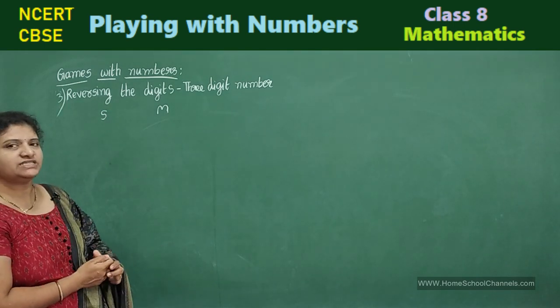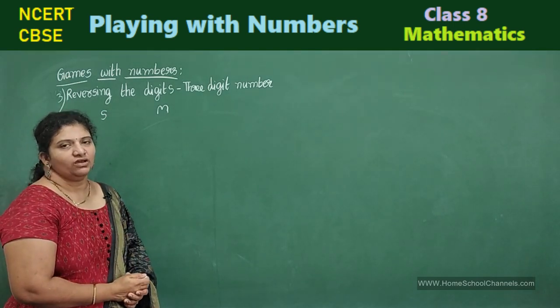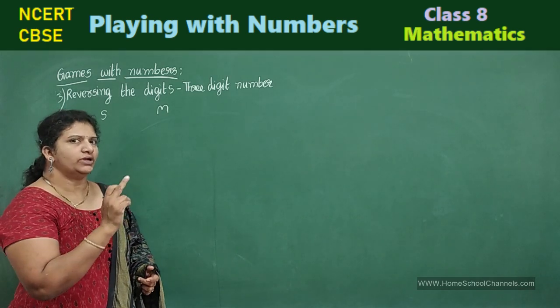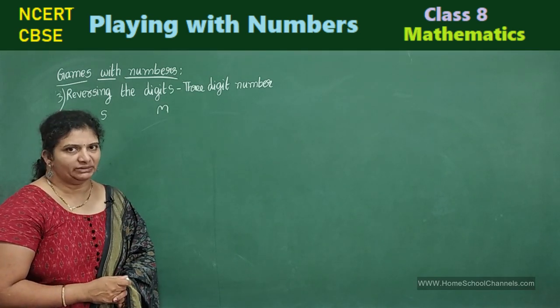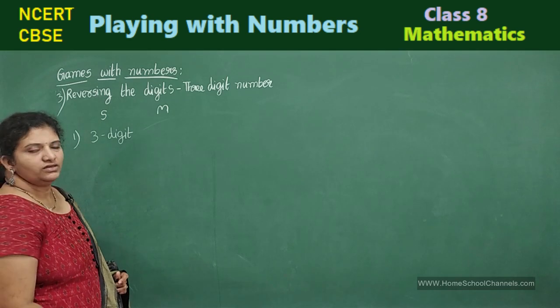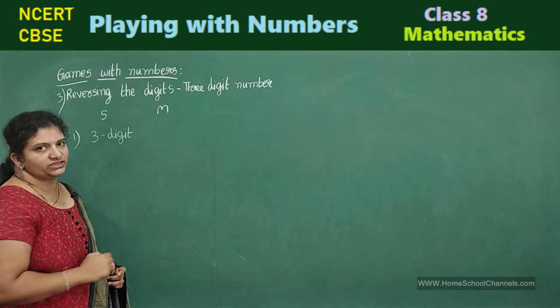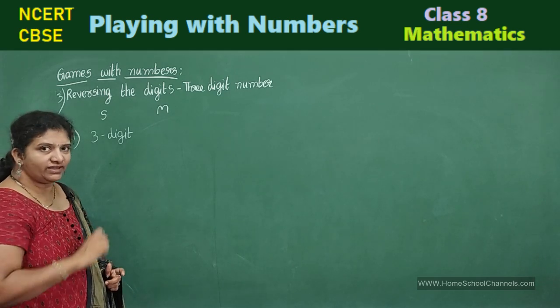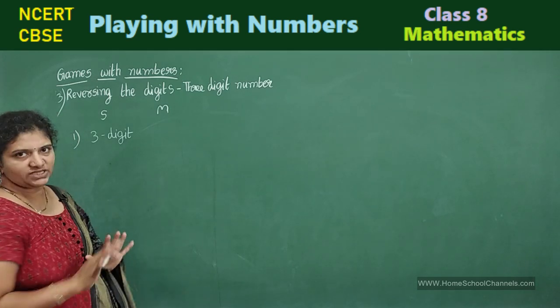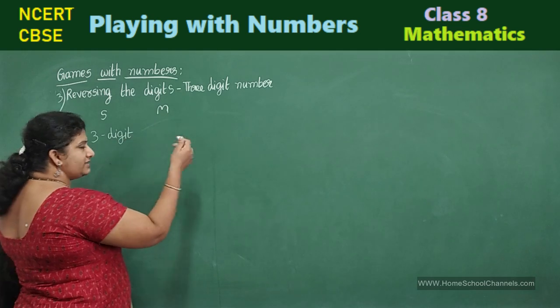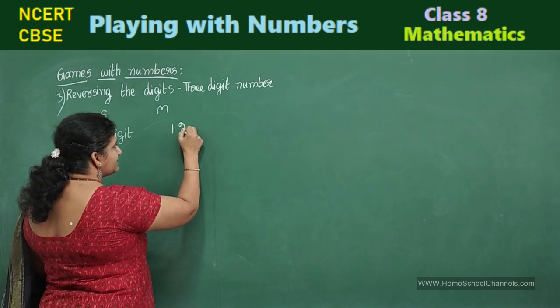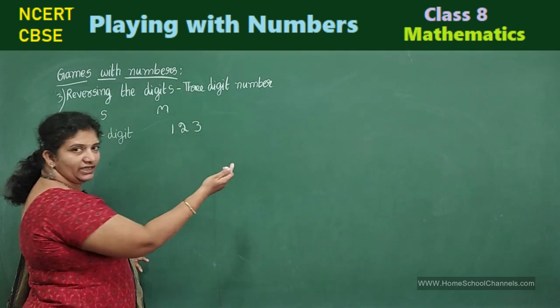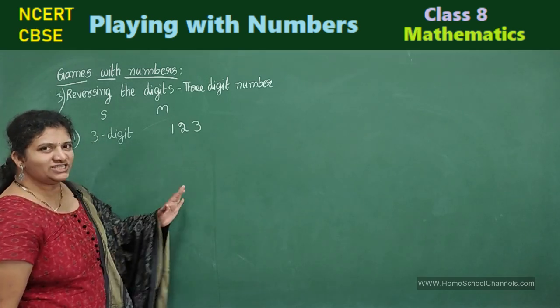Now Sundaram starts asking Meenakshi. What he says, think about a three digit number. First question. Sundaram asked Meenakshi, choose a three digit number. Don't reveal that number. So he won't say for anybody. So let us write. For understanding sake, I am writing that Sundaram don't know this number.